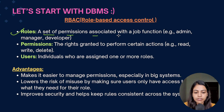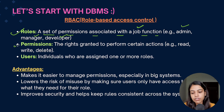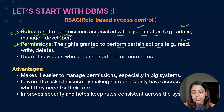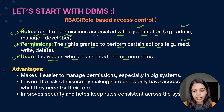A role is basically a set of permissions associated with a job function. For example, there could be an admin, a manager, or a developer in different organizations — according to their job function we provide different roles to different users. Permissions are the rights granted to perform certain actions such as read, write, and delete operations. Users are the individuals who are assigned one or more roles.